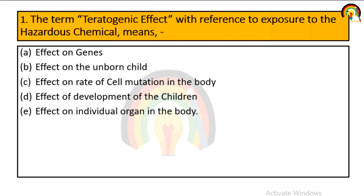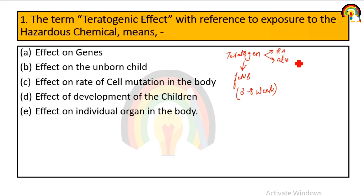The very first question: the term teratogenic effect with reference to exposure to hazardous chemicals means what? Hazardous chemicals are chemicals that are dangerous for humans. Teratogens are chemicals that affect the fetus, mainly between the 3rd to 8th week. Examples of teratogens include retinoic acid, alcohol, herbicides, diethylstilbestrol, and DDE. So teratogenic effect with reference to exposure to hazardous chemicals means it mainly affects the fetus, or the unborn child.